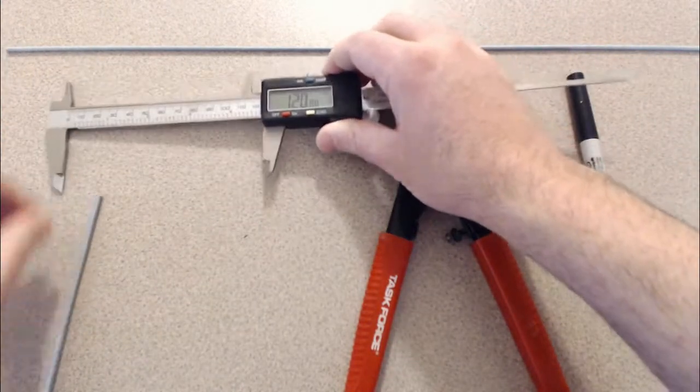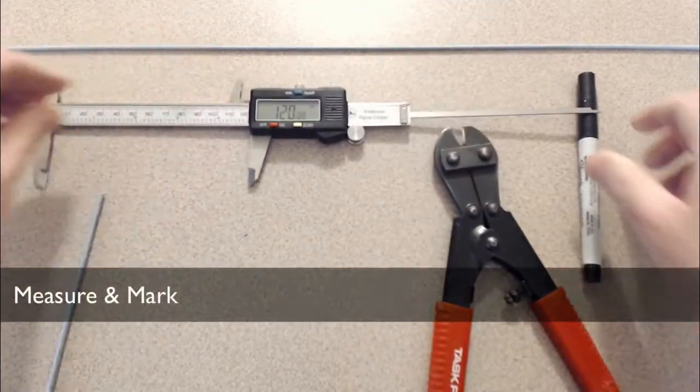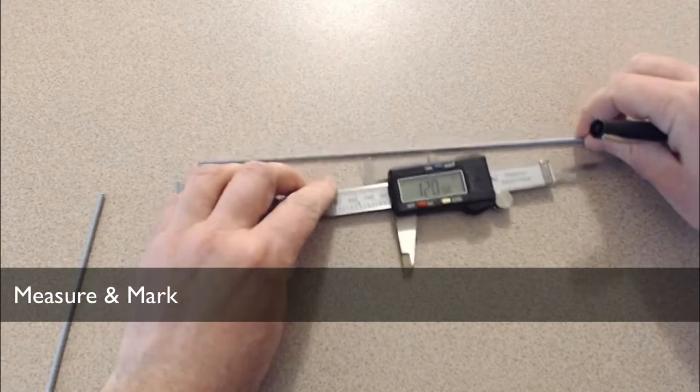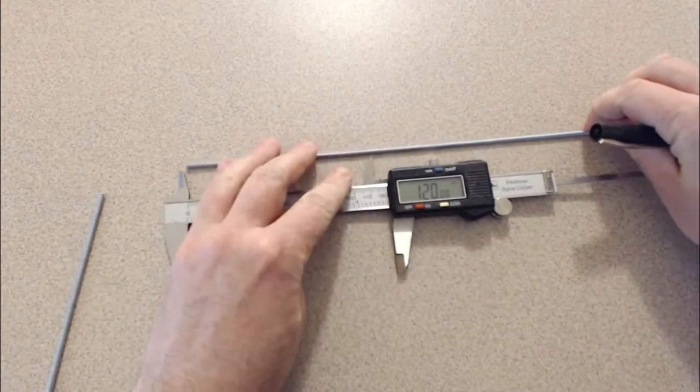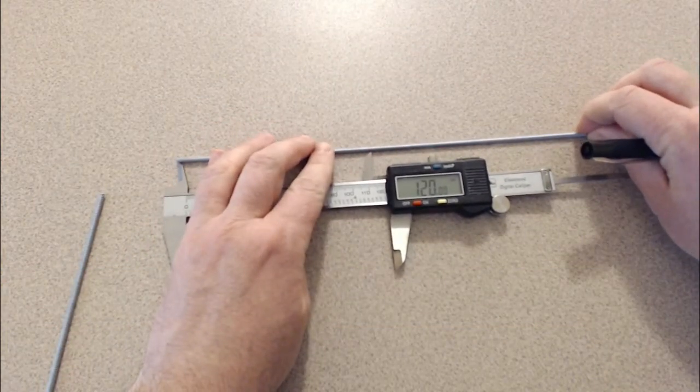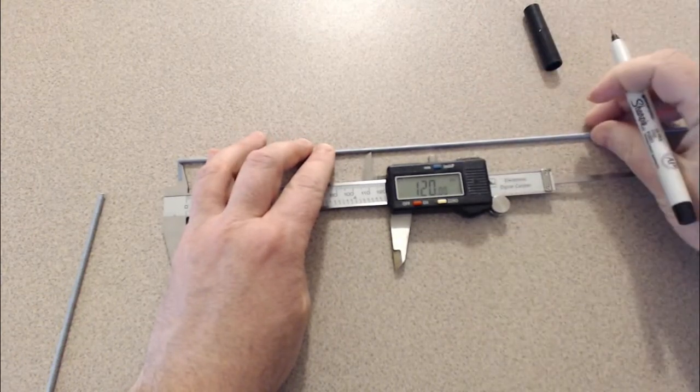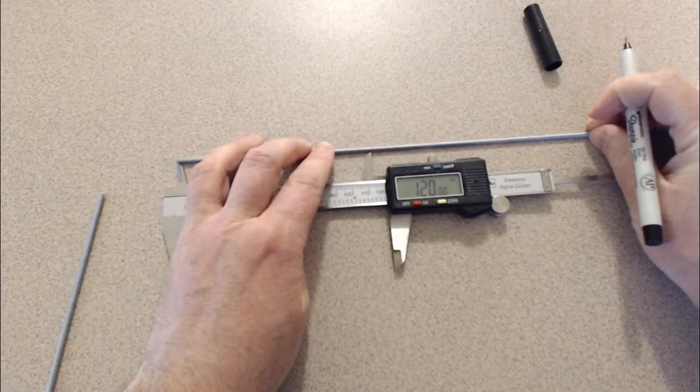So once that's ready to go, just put that there. All right, next thing we're going to do, take our threaded rod, line it up, and mark where it's exactly 12 centimeters.